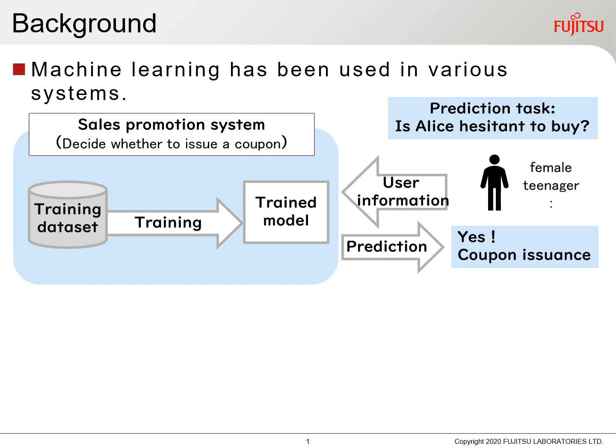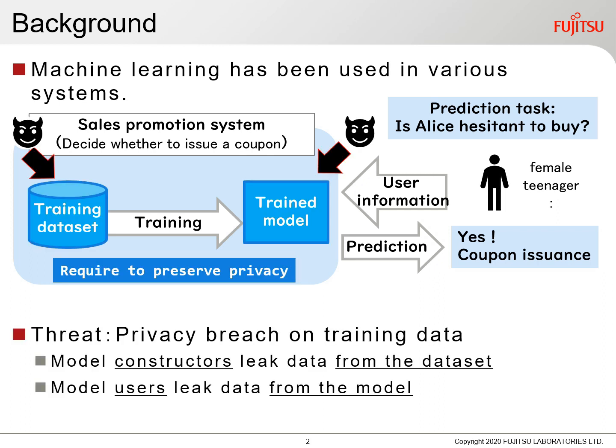By the way, if you use personal data, you will be worried about privacy. This case is at risk of leaking training data. For example, if a model constructor has access to the raw dataset, personal data may be taken out and leaked. In addition, if the trained model is released, a model user may leak training data from the model.